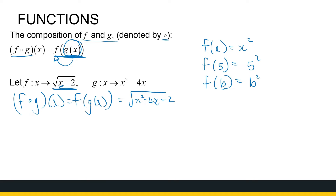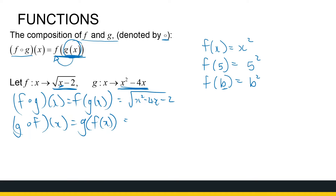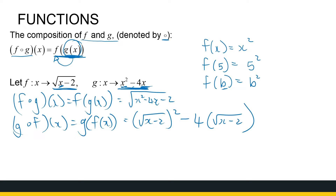Now take note: g composition f — is that going to be the same? Definitely not. That's g of f of x. So I start with my function g, and everywhere I see an x, I now put f of x. The first thing in g is x squared, so now I've got the root of (x minus 2) squared minus 4 times (square root of x minus 2). You can simplify that, but I just want you to understand the concept of composition.